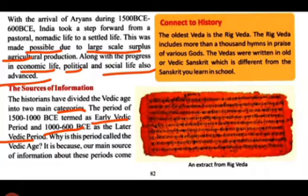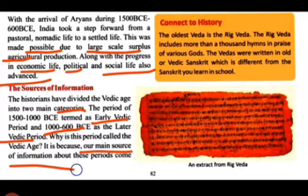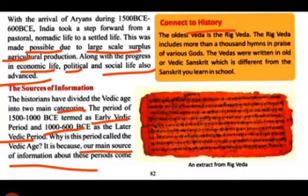Why is this period called the Vedic Age? Is kaal ko Vaidik Kaal kyun kaha jaata hai? It is because our main source of information about these periods comes from the four Vedas. Aisa isliye kyunki is kaal ki hamaari soochnaon ke mukhya srot char Vedon se aate hain. The oldest Veda, the Rigveda, is the most ancient text written. The Rigveda contains more than a thousand hymns.